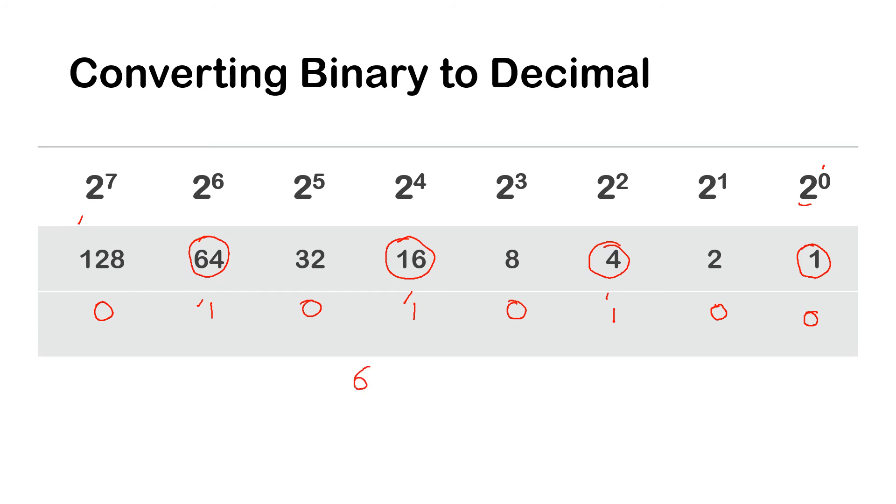All we need to do now is to add those numbers up. 64 at 16 at 4, that would be 84. Now remember this is base 10, so decimal. So the binary number 00101010 base 2, that is equivalent to 84. That's pretty straightforward.